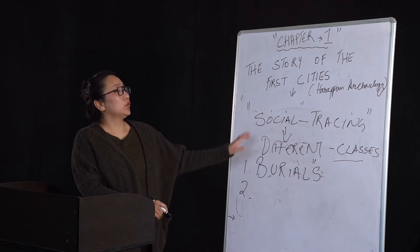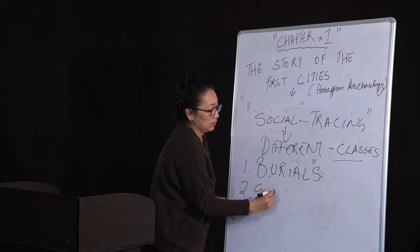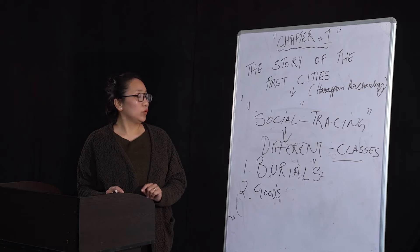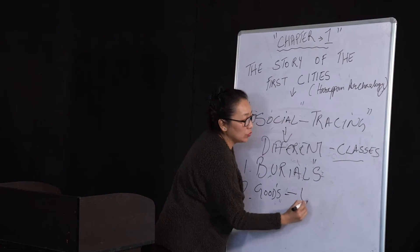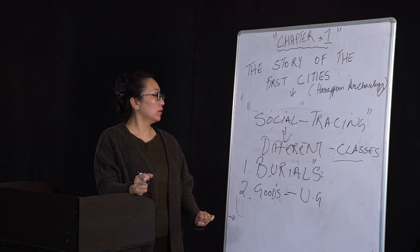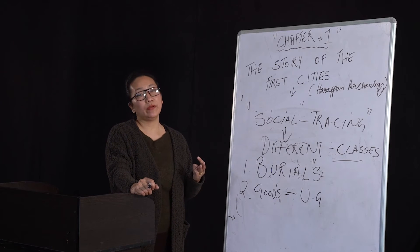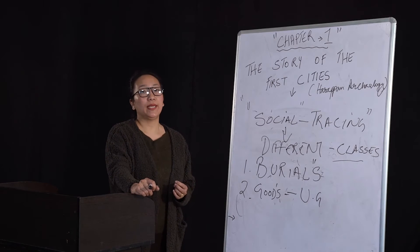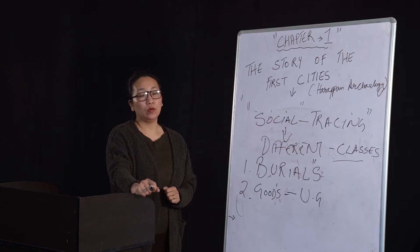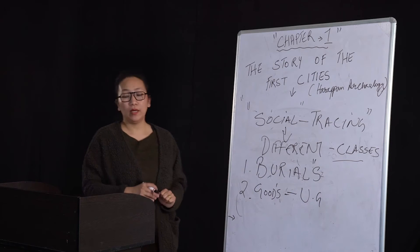The second method to study social and economic differences was by classifying goods found around the dead body into utilitarian goods and luxury items. Utilitarian goods were ordinary everyday materials. In some burials they found luxury items - materials that were very costly or products made through complicated methods or materials that were not local but brought from long distances. This is how identification of different classes in society is carried out by archaeologists.